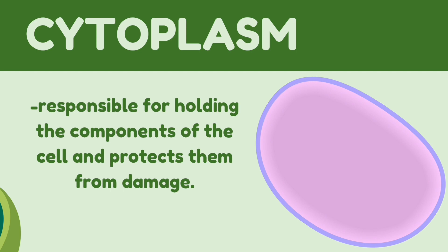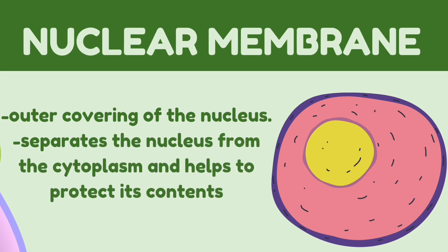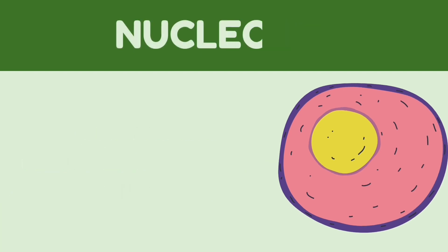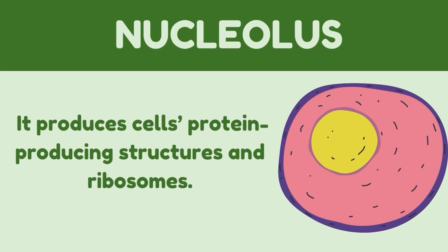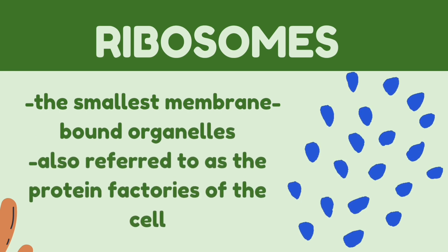Among the organelles the cytoplasm holds, we start with the nuclear membrane, which is the outer covering of the nucleus. It separates the nucleus from the cytoplasm and helps protect its contents. The nucleus controls and regulates the activities of the cell and is responsible for storing DNA required for cell division and growth. Inside the nucleus is the nucleolus, which produces protein-producing structures and ribosomes. Ribosomes are the smallest membrane-bound organelles, also referred to as the protein factories of the cell. If the nucleolus produces more ribosomes, the plant will grow more quickly.